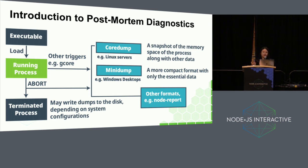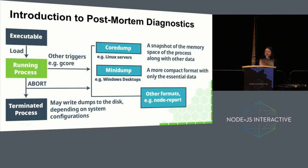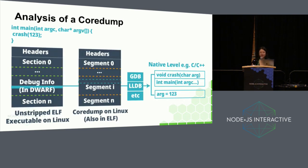For example, the Node report module that's being integrated into Node core can generate a summary with useful information when a Node.js process crashes. In this talk, we'll focus on core dumps and, specifically, Linux core dumps.